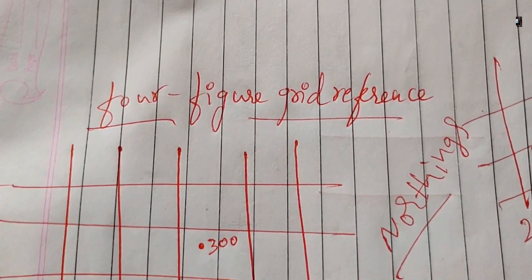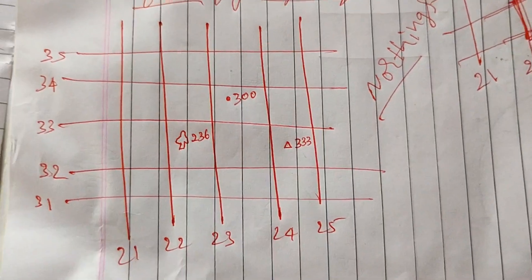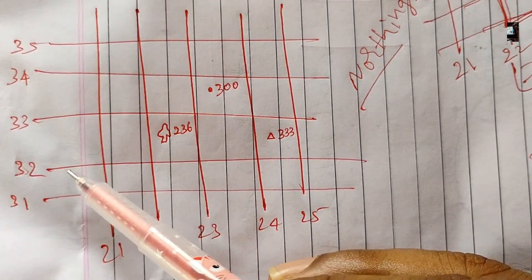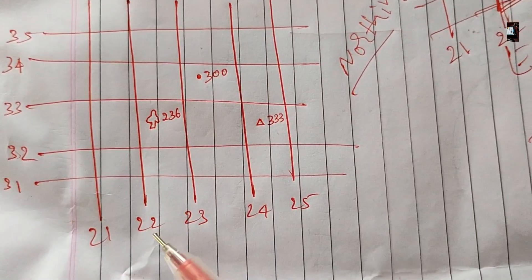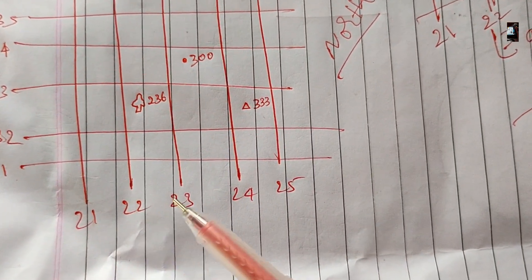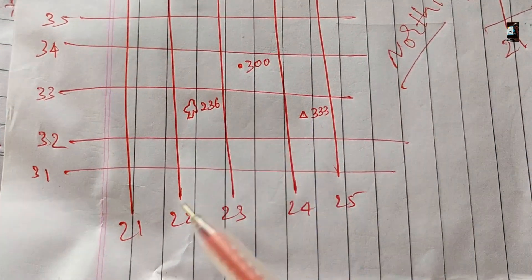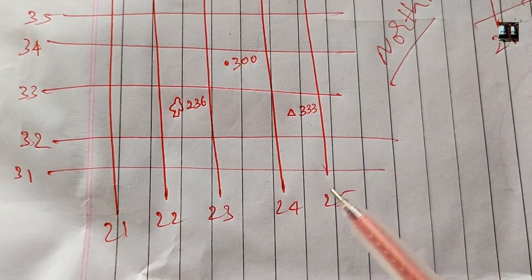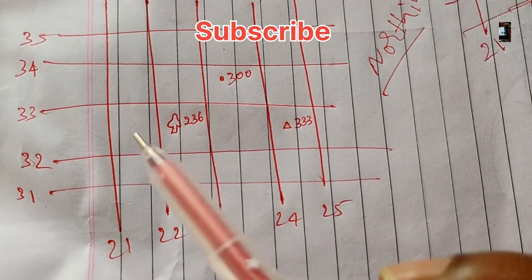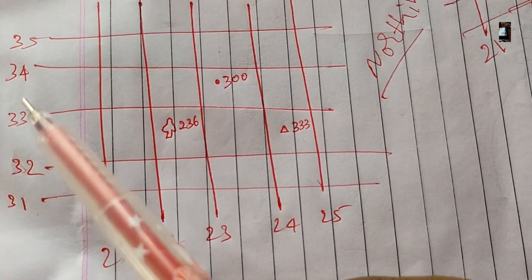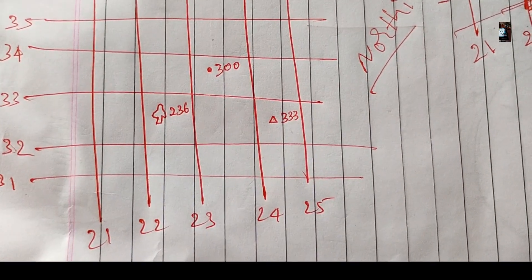To find a four-figure grid reference, we identify the square where the conventional symbols and signs are located. Look at the number of the horizontal line — 31, 32, 33, 34, 35 — at the bottom of the square; this is called northings. Look at the number of the vertical line — 21, 22, 23, 24, 25 — on the left side of the square; this is called eastings. Together they form the grid reference. Eastings are always stated first, followed by northings.